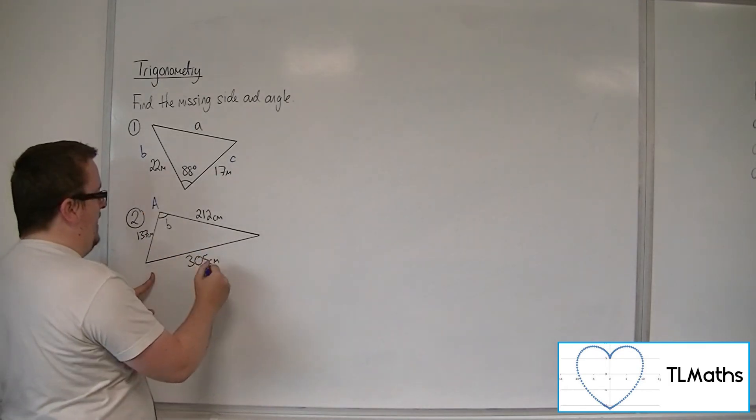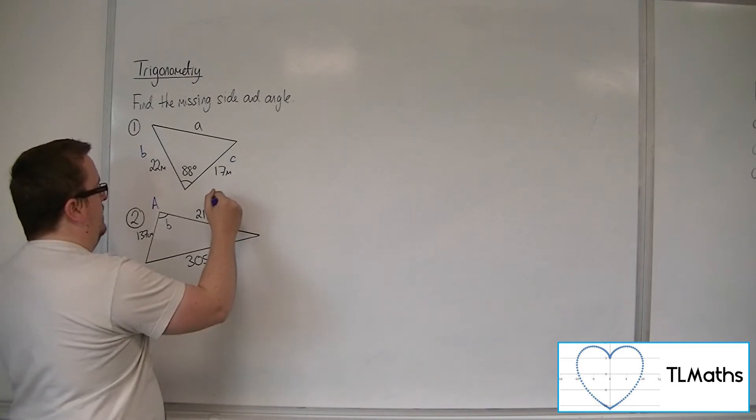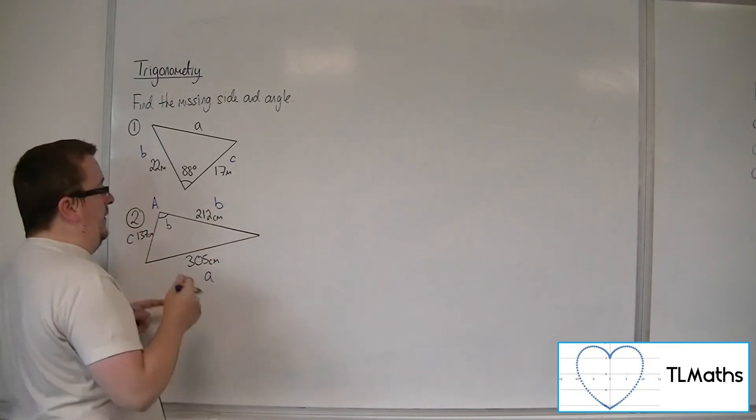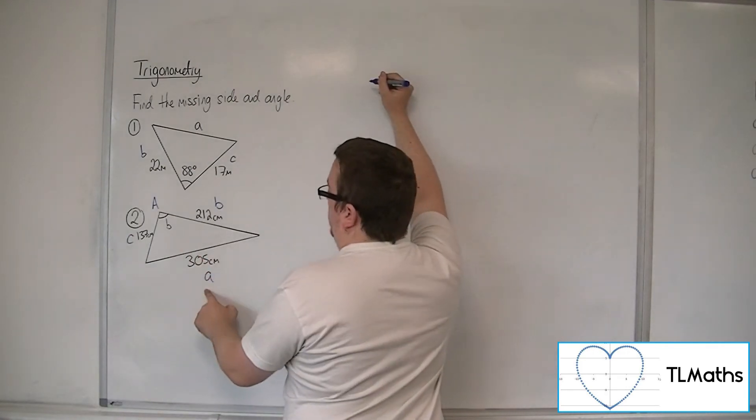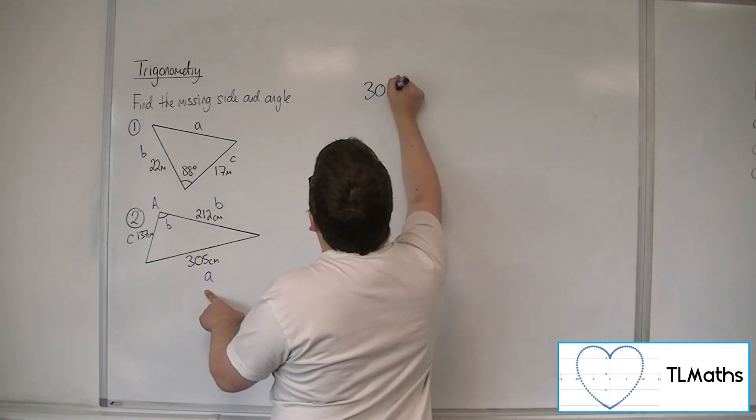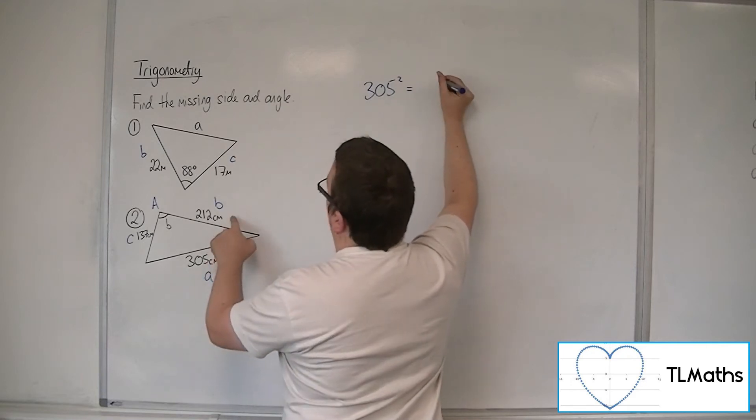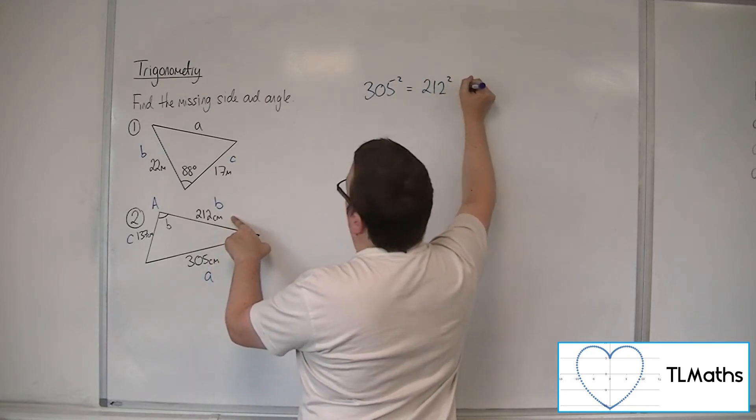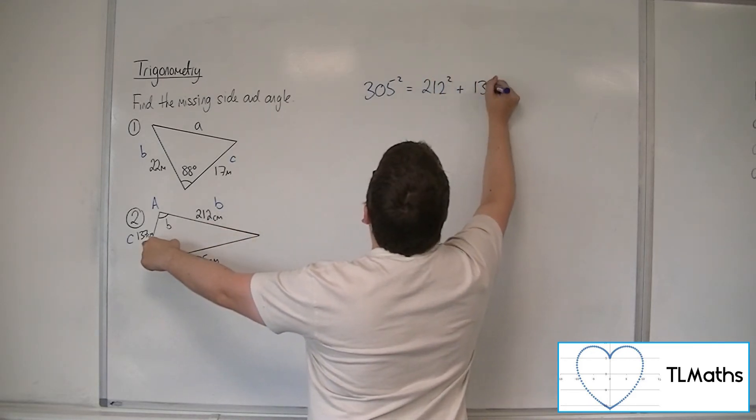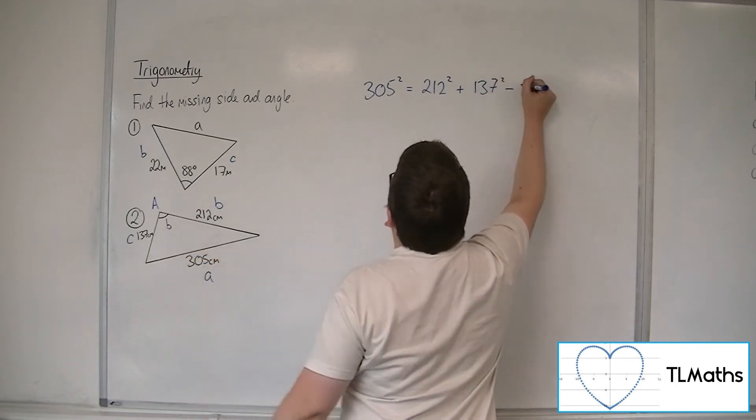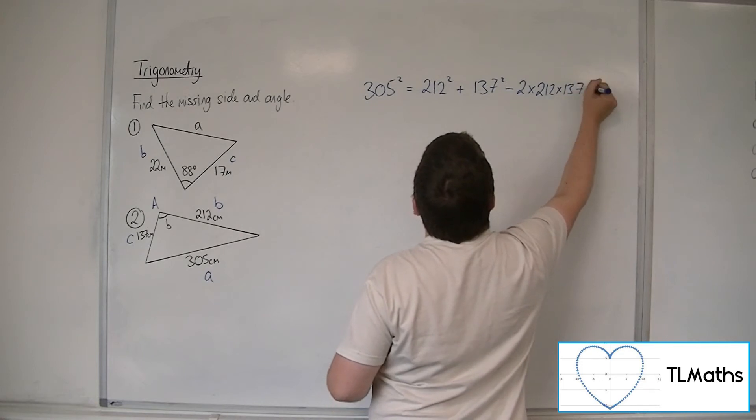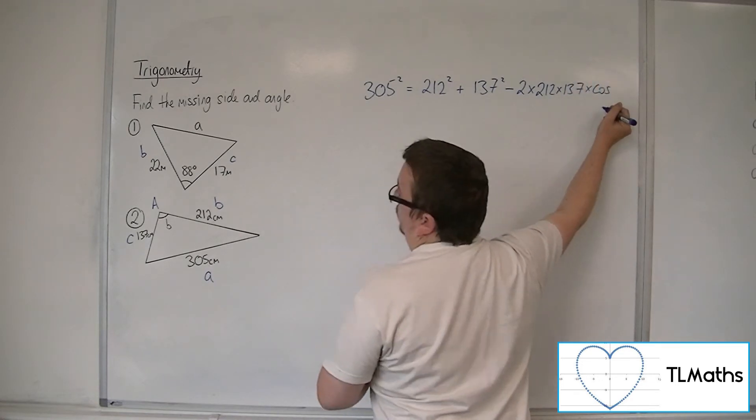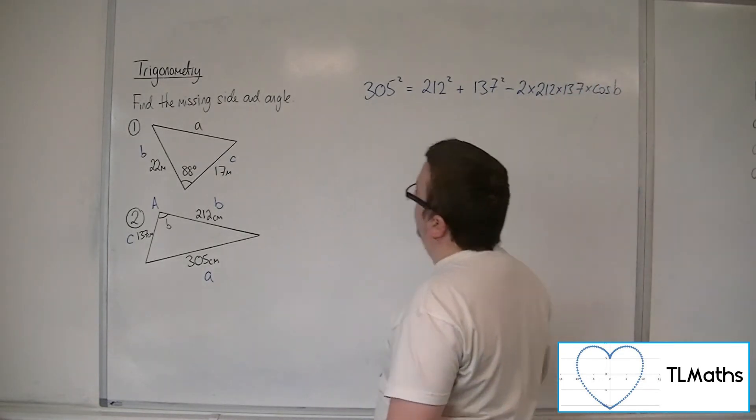Let's call that angle A. There's little a, there's B, there's C, for example. Then A squared, so 305 squared is equal to B squared plus C squared, take away 2 times B times C times cosine of the angle that I want.